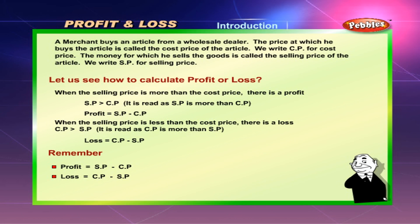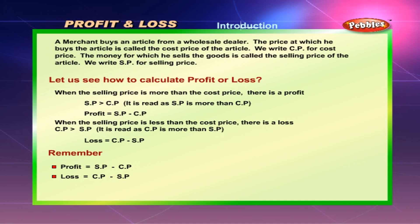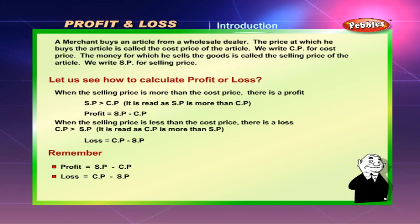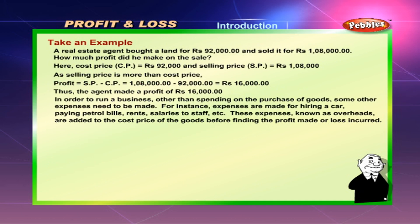When the selling price is more than the cost price, there is a profit. SP is more than CP: profit equals SP minus CP. When the selling price is less than the cost price, there is a loss. CP is more than SP: loss equals CP minus SP. Remember — profit equals SP minus CP, loss equals CP minus SP.